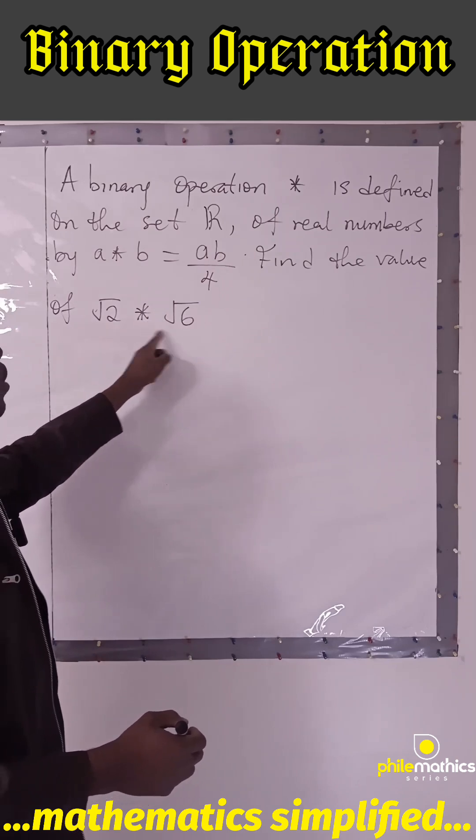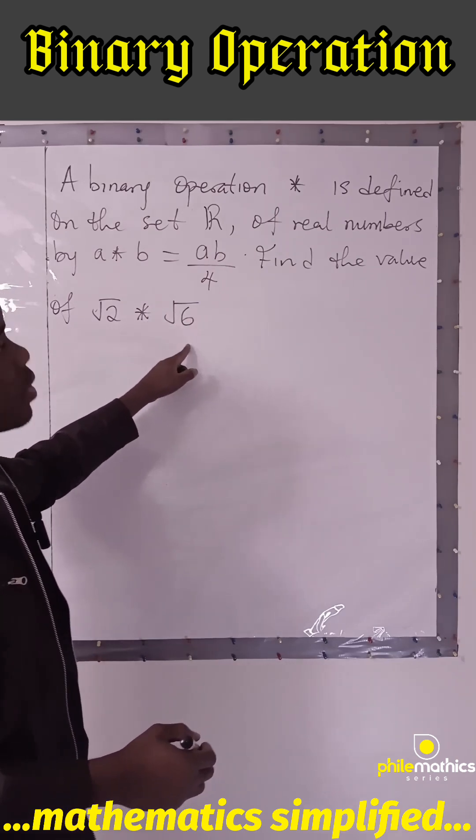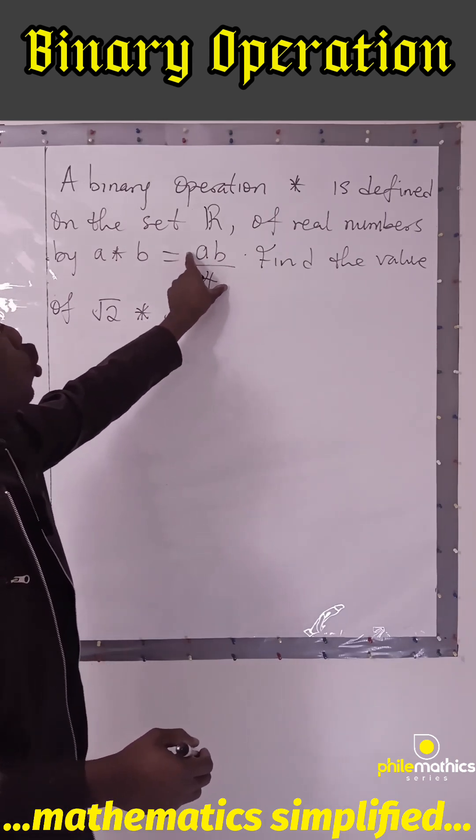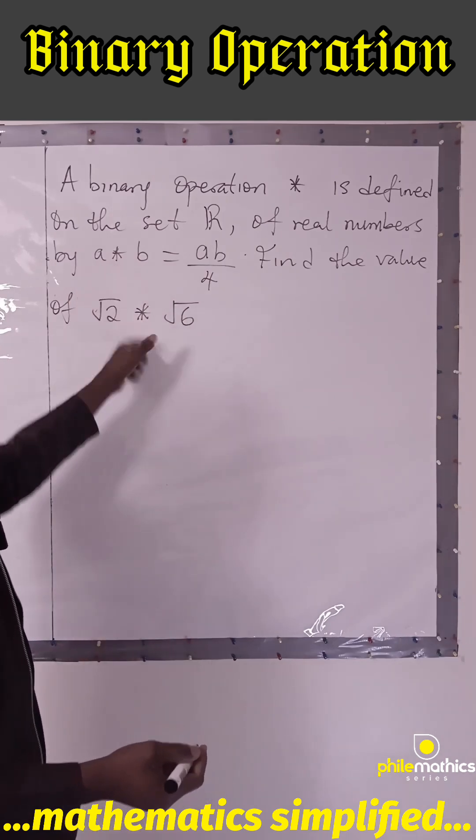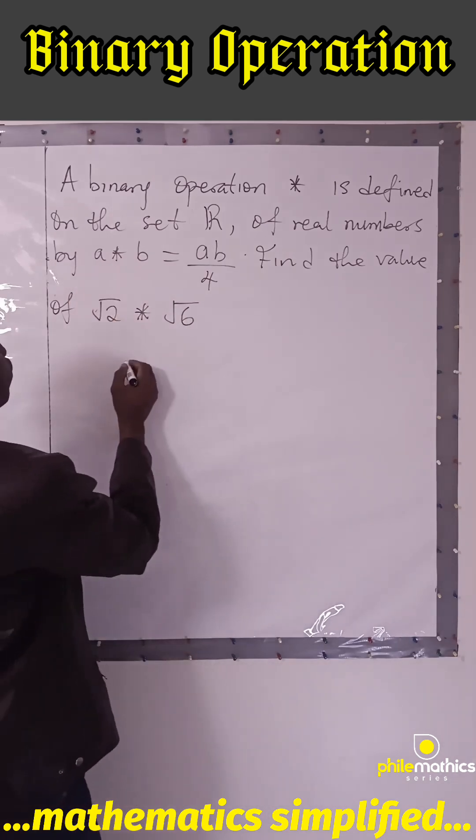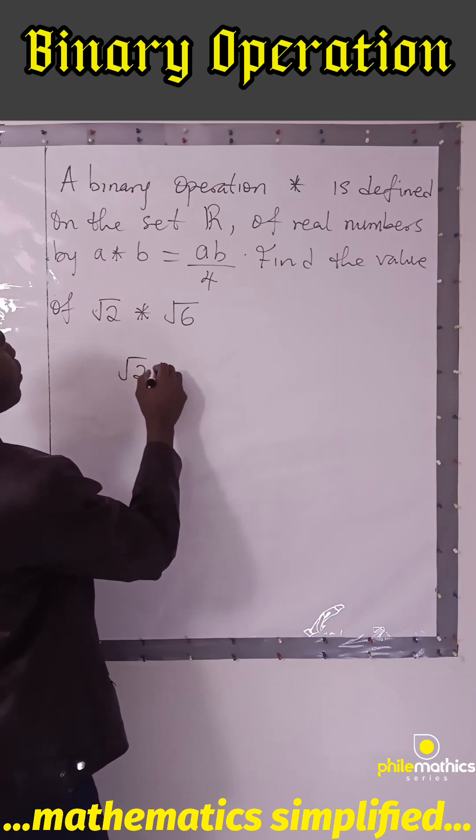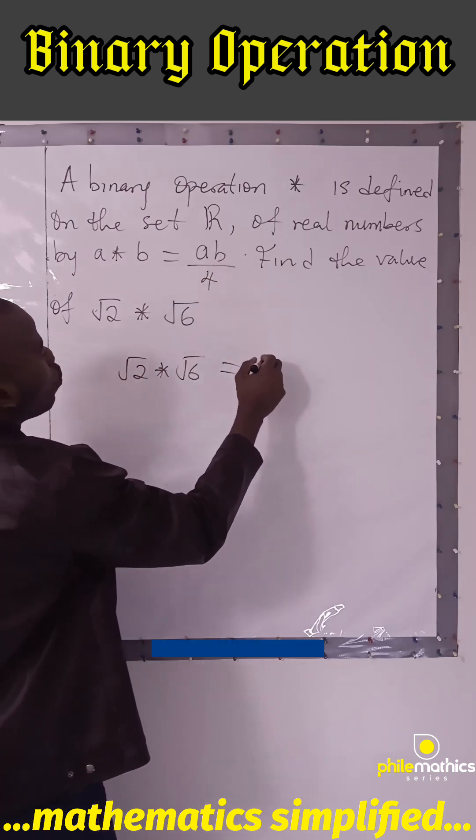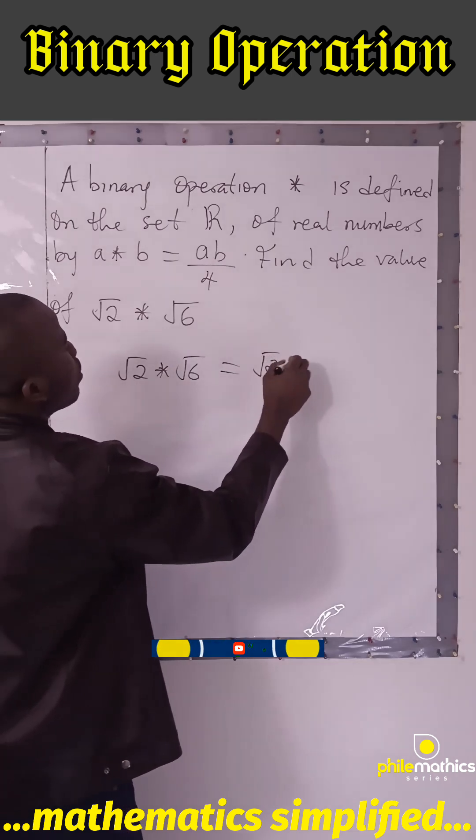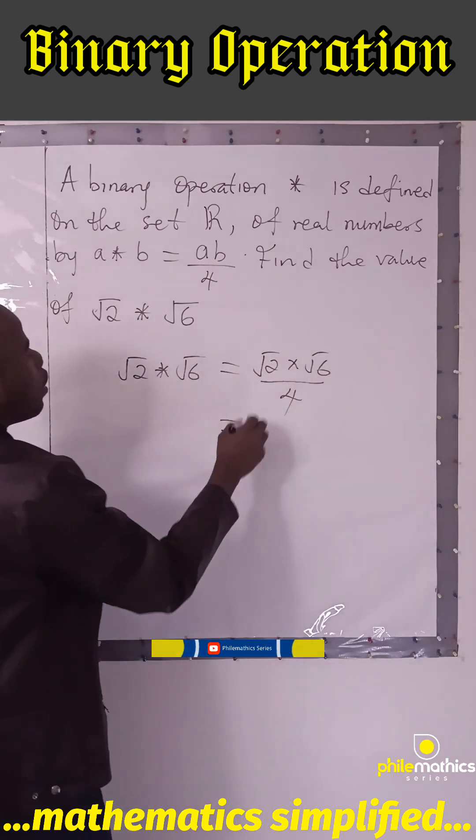To evaluate root 2 * root 6 following this definition, we have root 2 times root 6 over 4. Root 2 times root 6 equals root 12 over 4.